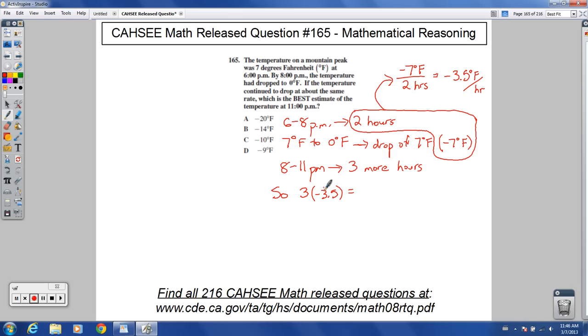So we can say that we have 3 times negative 3.5 is going to equal, well, if we do negative 3 times 3, that's negative 9. And then 3 times 0.5 more, that would be 1.5. So that put together would be negative 10.5 degrees,